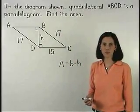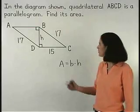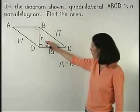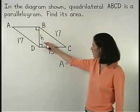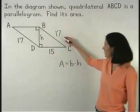Now we can use the Pythagorean theorem to find the value of h and we have 15 squared plus h squared equals 17 squared.